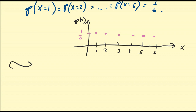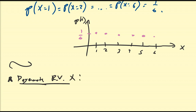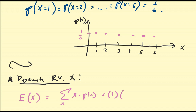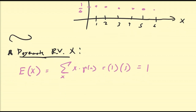Now let's derive the properties — expected value, second moment, and variance — for each of the three random variables, starting with the degenerate. Let X be the degenerate random variable. The expectation of X, by definition, is the sum over all x in its support of x times p(x). There is only one value in the support, namely 1, and its probability is 1. So 1 times 1 equals 1, therefore the expectation of a degenerate random variable is 1.